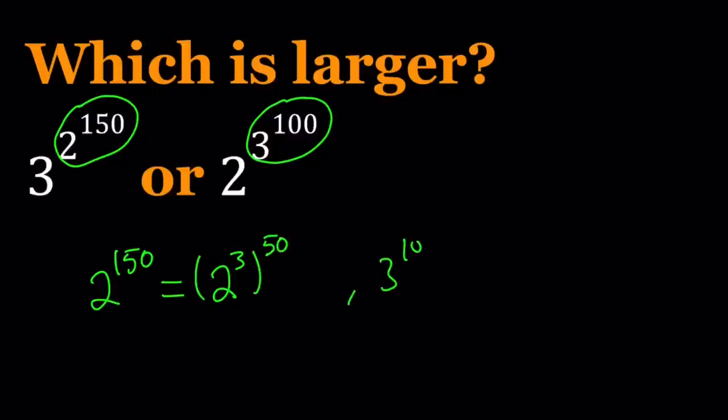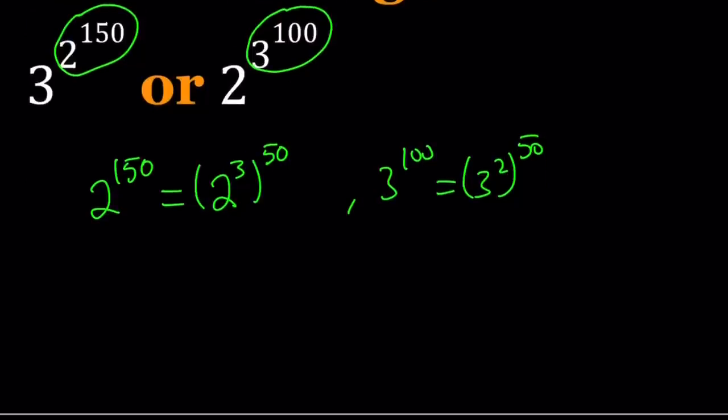And 3 to the power 100 can be written as 3 to the second power to the power 50. Notice that these two numbers have the same exponent if you just ignore what's inside the parentheses. Obviously, 3 squared is 9 and 2 cubed is 8. So 3 squared is greater than 2 to the third power. 9 is greater than 8.